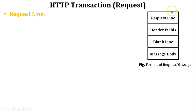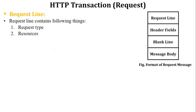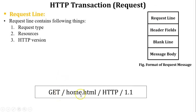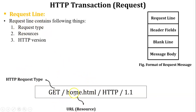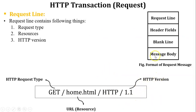The request line is the first field of the request message format. The request line contains three things: the request type, the resource, and the HTTP version. For example: GET is the HTTP request type, home.html is the resource or URL — the address of the web page — and HTTP/1.1 is the version of the HTTP protocol. So this is an example of an HTTP full request, because whenever you mention the HTTP version in the request line, it indicates a full request.